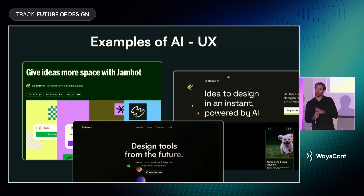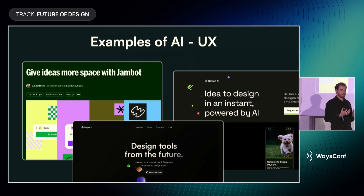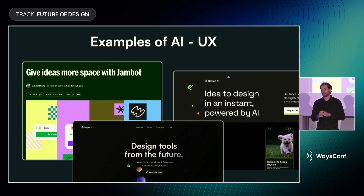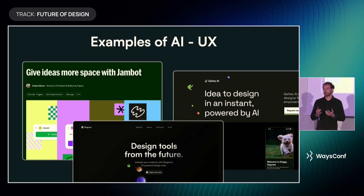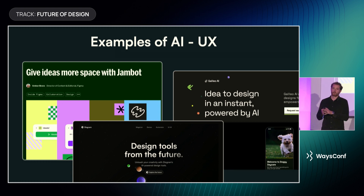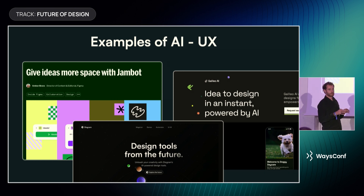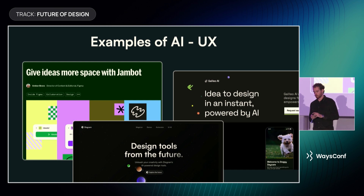The team at Galileo AI takes a different route. They promise — and as of now it's more of a concept than a finished tool — to enable you to create interfaces simply by typing in natural language what you want the interface to look like. That would essentially automate the part where a client has an idea for a concept, automating the whole process and, in a sense, replacing the designer for that step.